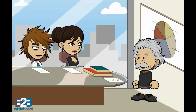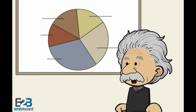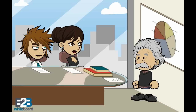Well Sarah, assessable income is gross income including salary and wages, dividends, interest and rent before any tax deductions are allowed. Assessable income also includes other amounts that are not ordinarily classed as income. Thanks Professor, for defining assessable income.